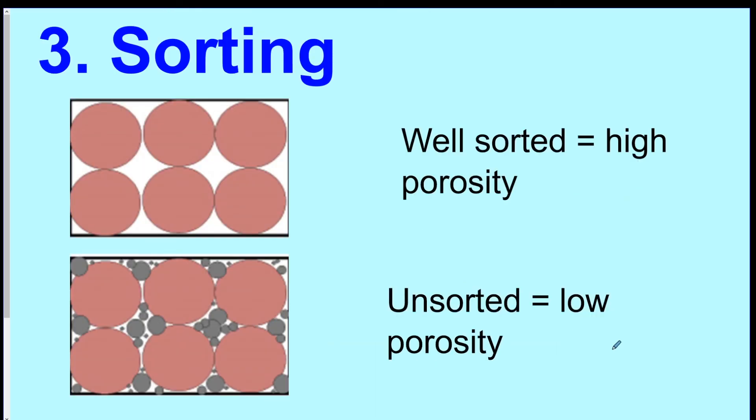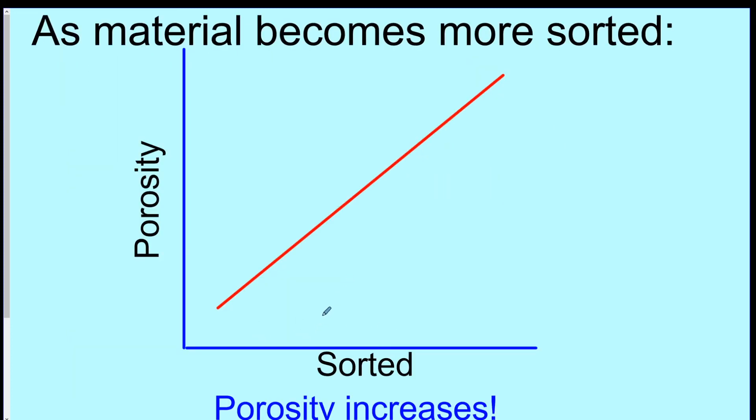Number three, sorting. Sorting just means the same size particles. So if you have a lot of same size particles, like in this picture, you have high porosity. Look at all the space. As opposed to unsorted, this is different size particles. Look, all the tiny particles fill in the gaps of the big ones. So this would be low porosity, less space. So as material becomes more sorted, your porosity goes up.